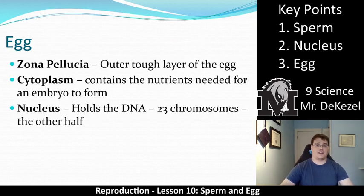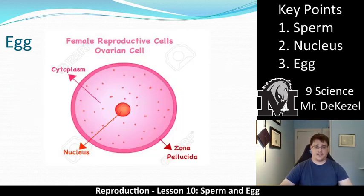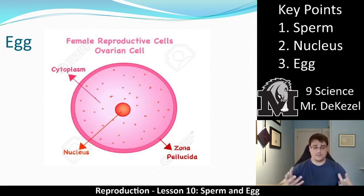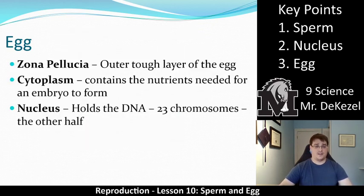We have the cytoplasm, which is all the stuff inside the egg — the pink material with the small orange dots in the diagram. The egg needs to provide nutrients to allow for cell division afterwards. The sperm essentially brings nothing along with it other than DNA, so the egg needs to be prepared to keep the zygote alive through cell division, using that cytoplasm for energy. We also have the nucleus, which holds the female's DNA. It is haploid, containing 23 chromosomes because it was created through meiosis.